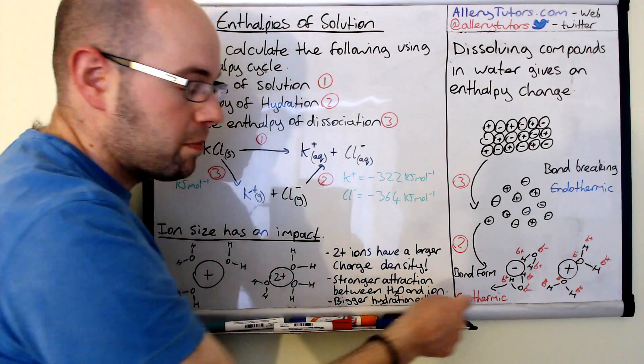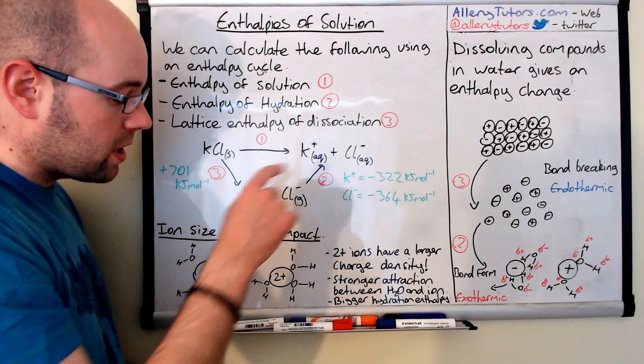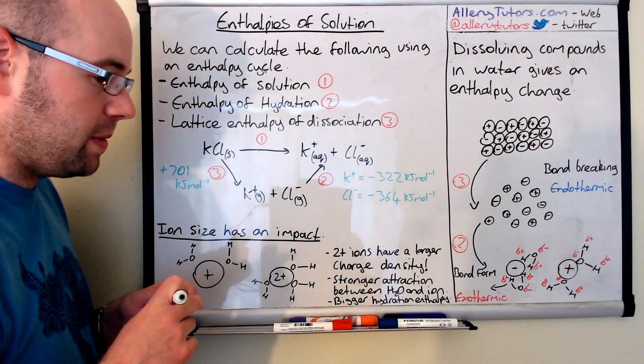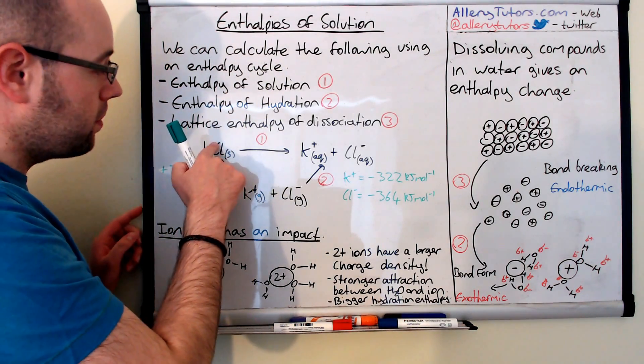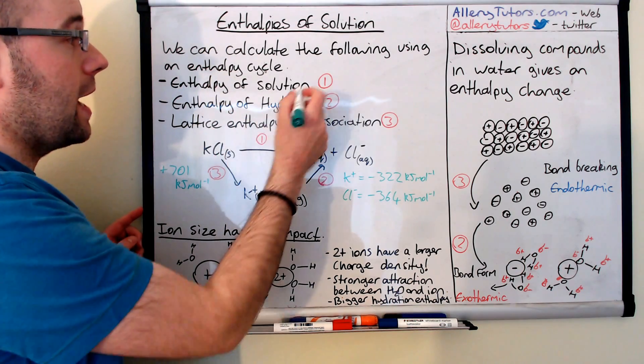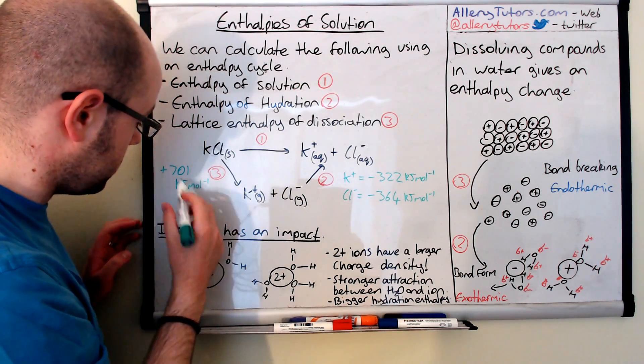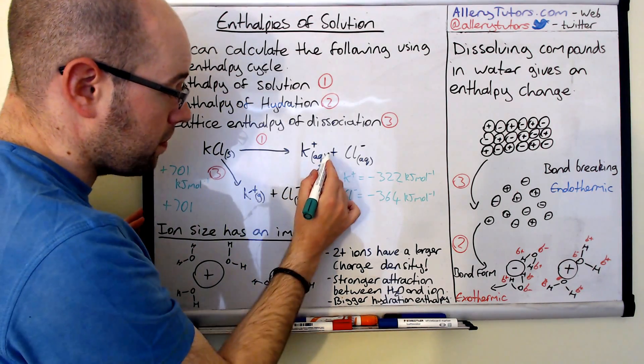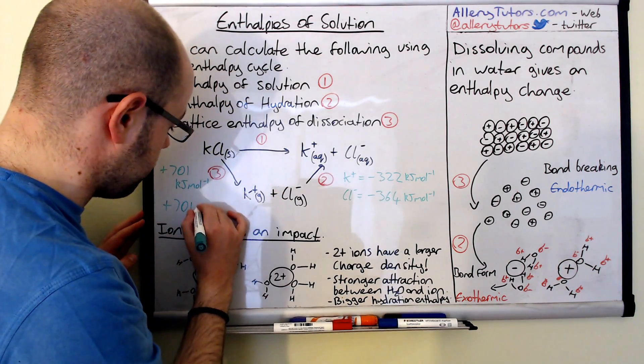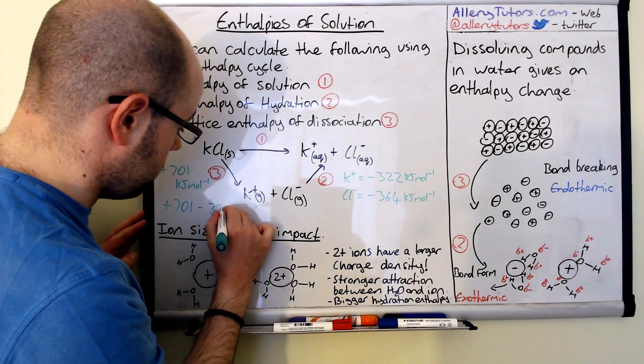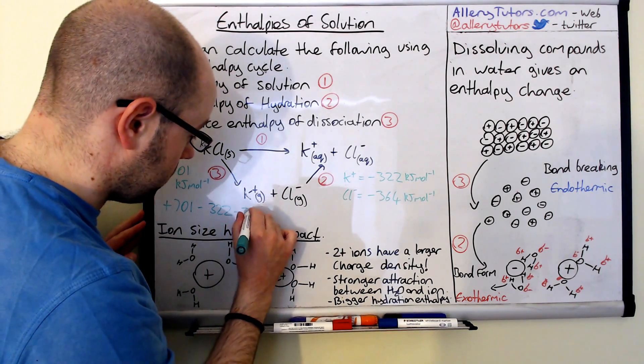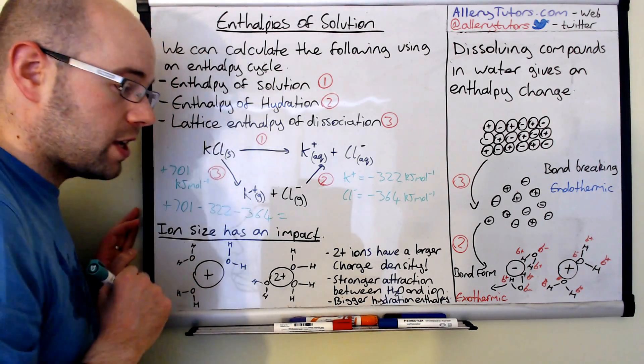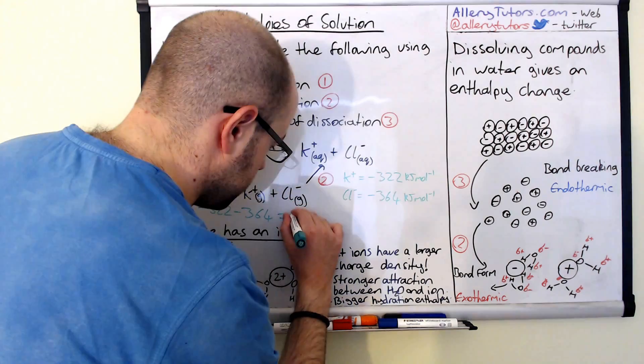Remember this is exothermic because we're bond forming. So we can use it and treat it in exactly the same way as a Hess cycle. So we start from here. We want to work out this value which is the enthalpy of solution. So we go through here. This is plus 701 and then we go up here because we go with the arrow. The sign stays the same. So that's minus 322 minus 364 because it's the two ions, and then that should give us a total value of plus 15 kilojoules per mole.